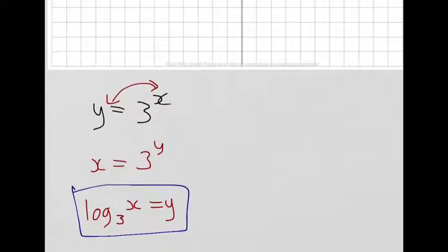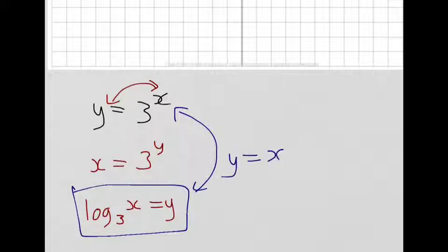That is the inverse of 3 to the x. The inverse reflects it on the line y equals x, so we should notice that when we graph this. Also, all the x and y values in the original function are flipped — the y's become the x's and the x's become the y's. That basically happens when we switch the variables x and y around.